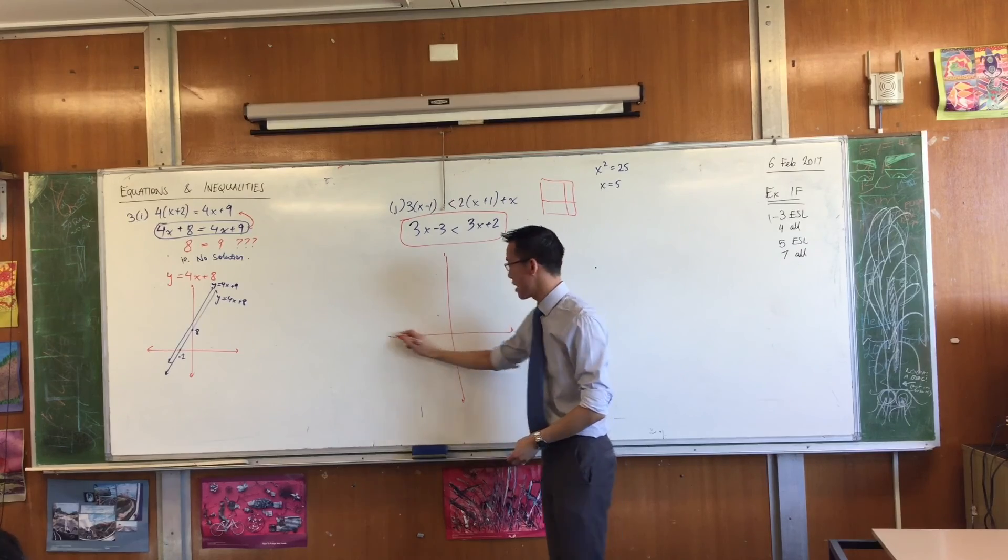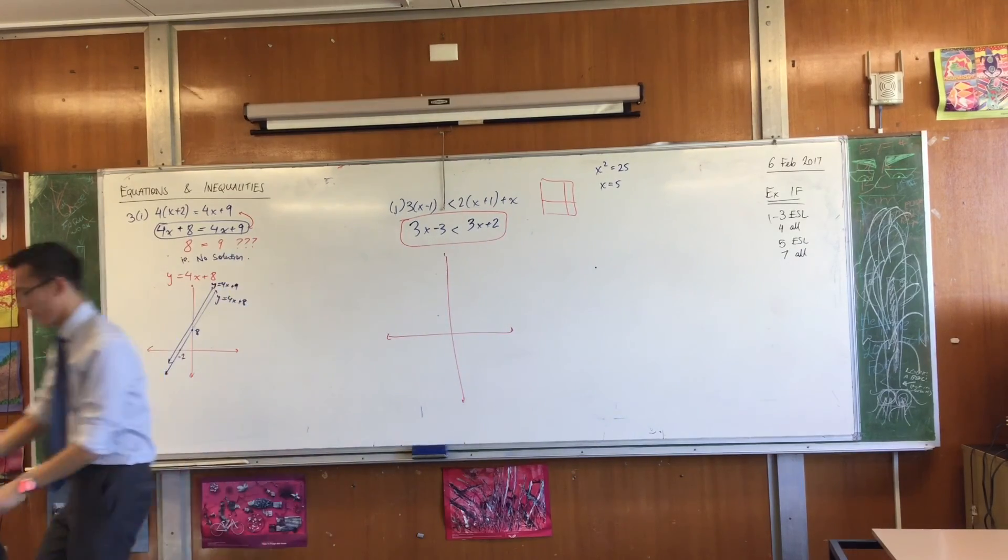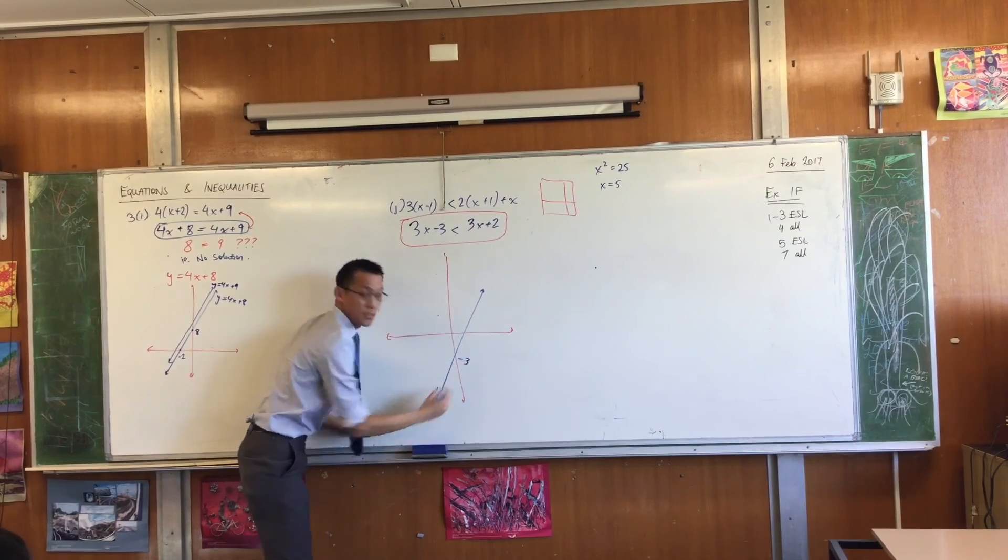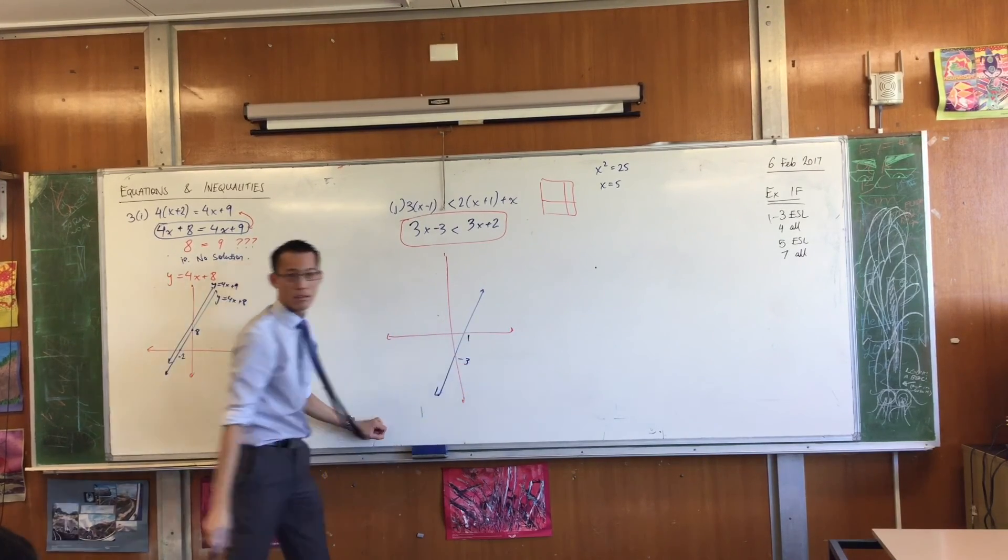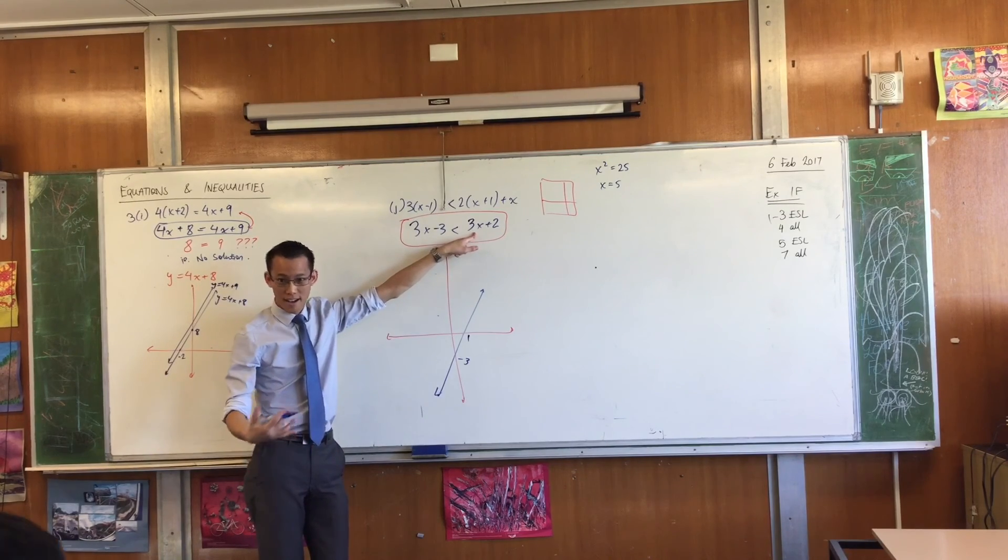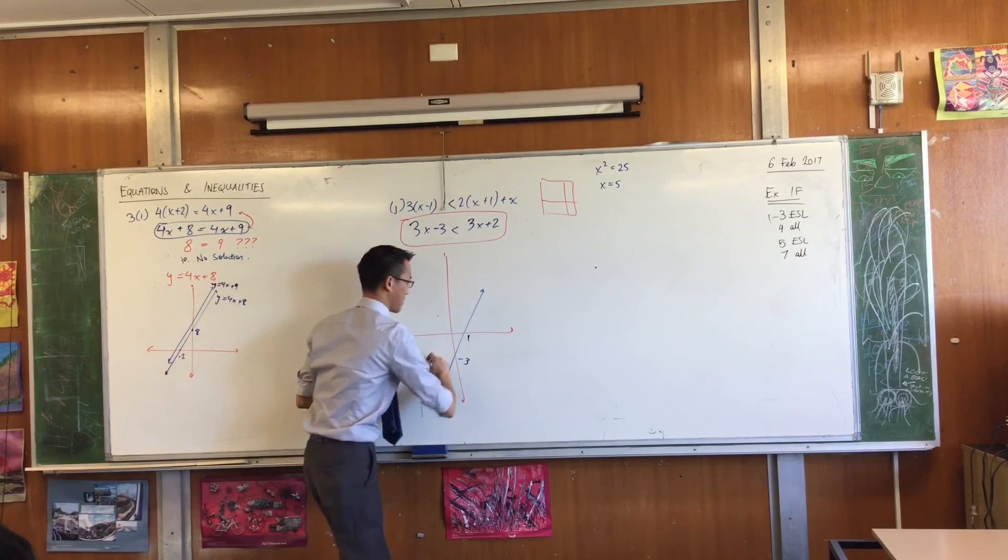Can you tell me what 3x minus 3 looks like? It intersects down here and it goes up. Right? Do you agree with that? That happens to be 1. Okay. What's that guy look like? Intercepts in 2x. Again, it's parallel except it's higher.